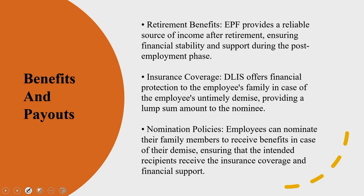When you look into DLIS, insurance coverage is there. DLIS acts as a life insurance scheme for EPF members — in the unfortunate event of an employee's death while in service, there is a benefit calculation via a specific formula. Nomination policies are also there: both EPF and DLIS require employees to designate a nominee — the individual who will receive the accumulated corpus or benefit amount in case of the employee's death. Employees can designate more than one nominee, specifying the percentage share that will go to each of them.